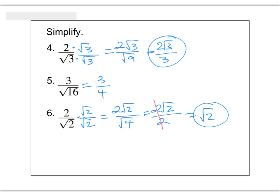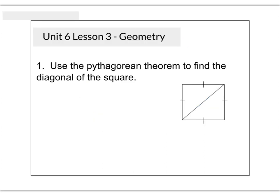This will come into play in today's lesson a little bit. So let's start our actual lesson, Unit 6, Lesson 3. Today, we're going to study two very special right triangles. One is called the 45-45-90, and one is called the 30-60-90. We're going to start with the 45-45-90 triangle.